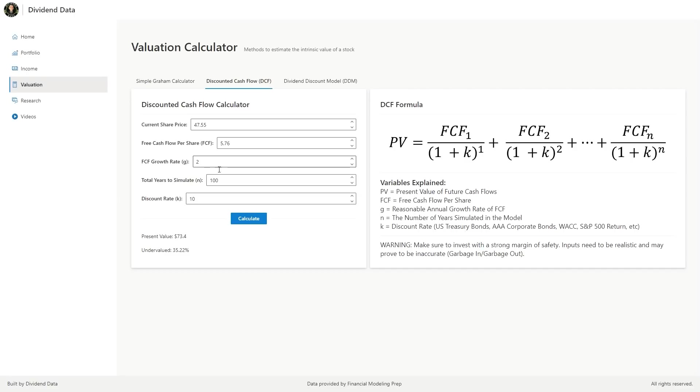Let's change some of the variables and see how that alters the output. If we have a growth rate of 3%, then the present value is now $84.64. At 4%, it's $99.47. Let's put the growth rate back at 2% and change the number of years. When changed to 50 years, the present value is $71.76. At 25 years, it's $62.32. Let's put it back at 100 years and now change the discount rate. At 7%, the present value is $116.52. At 5%, the present value is $185.05.